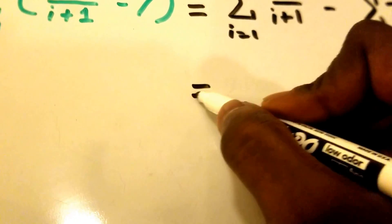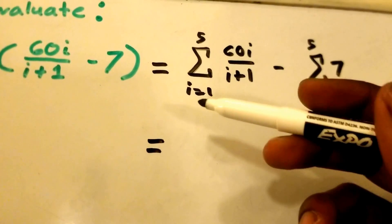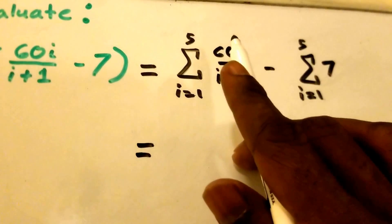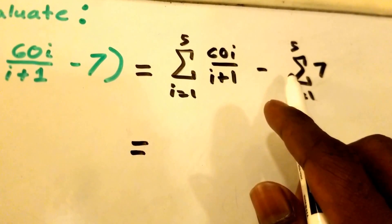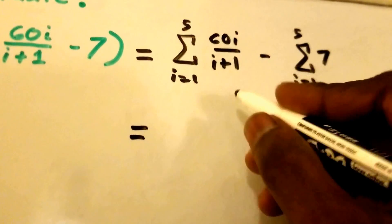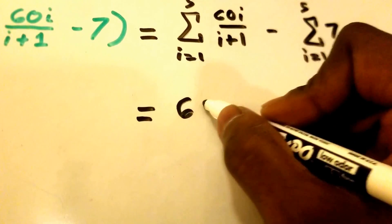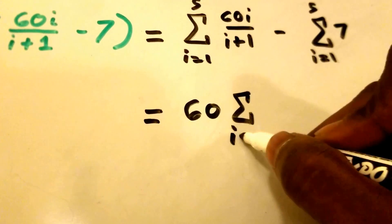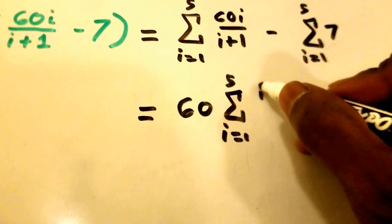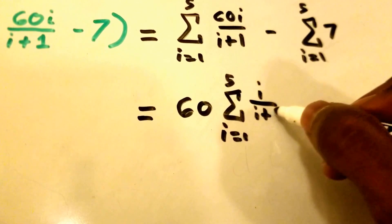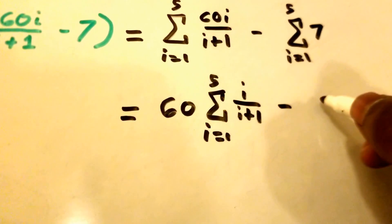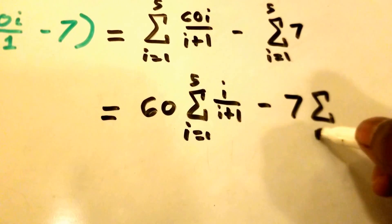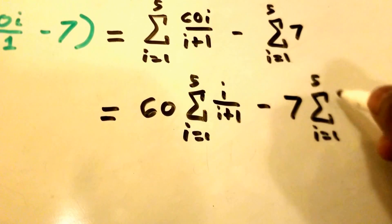Now we can use another summation property to move the 60 and 7 in front of the summation. So now we get 60 times the summation from i equals 1 to 5 of i divided by i plus 1, minus 7 times the summation from i equals 1 to 5 of 1.